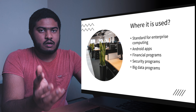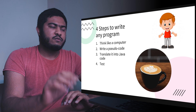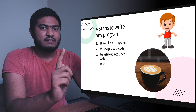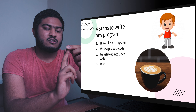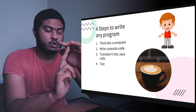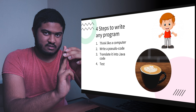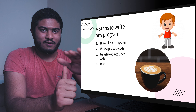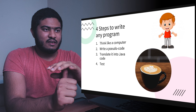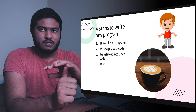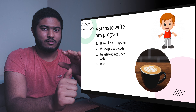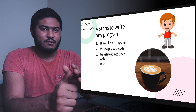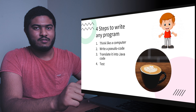The first step to write any program: first, think like a computer; second, write pseudocode; third, translate your pseudocode into Java code; and fourth, test. The first point — a computer is dumb, it doesn't know anything, it only follows your instructions. Think of it like your four-year-old nephew: you can't trust him, you have to always guide him with everything.